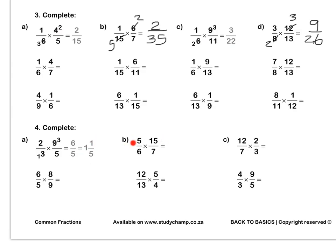Let's do B together. We can simplify the 15 and the 6 by dividing both by 3, leaving 5 and 2. We multiply out to get 25 over 14, which is an improper fraction. 14 fits into 25 once, remainder 11 fourteenths. Press pause to complete question 4 by yourself.